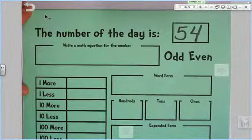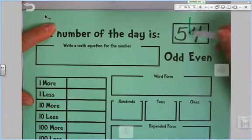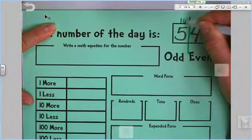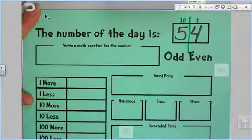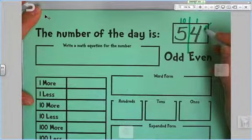Let's take a look. When we look at the number 54, let's go ahead and make our place value mat. Here we have our tens, here we have our ones. What number matters when we're looking for odd or even?